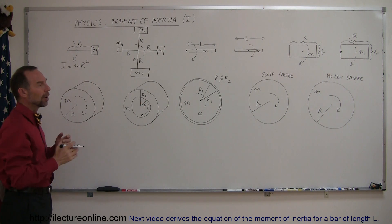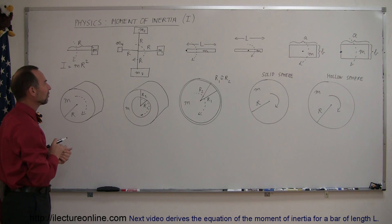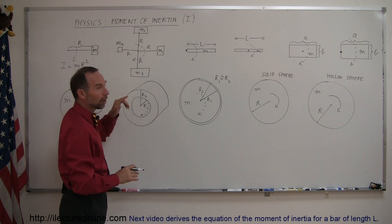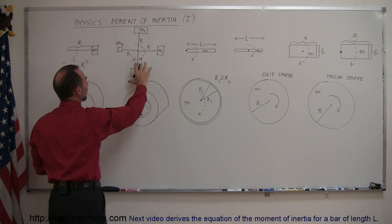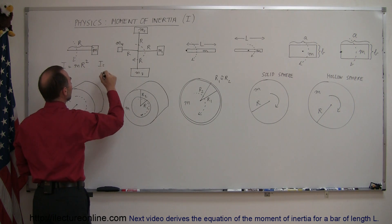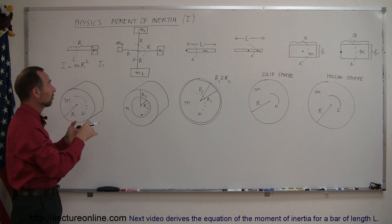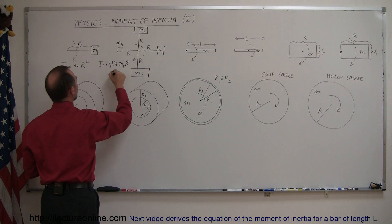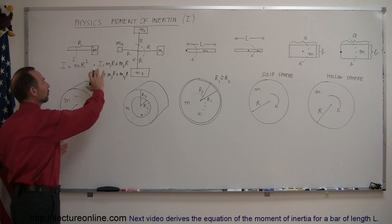On the board here I have drawn a number of different objects and we need to find the moment of inertia in each case. Here we have four objects attached to a small thin bar, and we'll assume the bar has very little mass. The moment of inertia is simply the sum of all the masses times their radius squared: m1r² + m2r² + m3r² + m4r². We simply add the individual moments of inertia together to get the total.